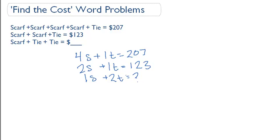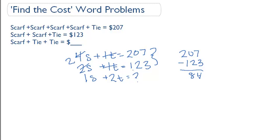So the first thing we can do is subtract these two equations. We have two hundred and seven minus one twenty three, and that gives us eighty four. Because they both include one tie, this difference represents the cost of two scarves. So we take eighty four, divide it by two, and find that the cost of one scarf is forty two dollars.